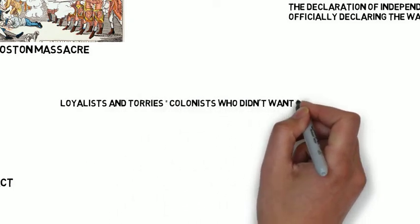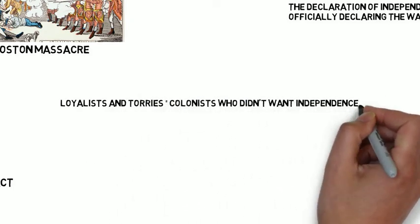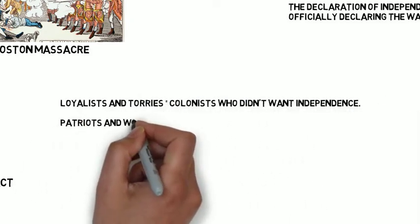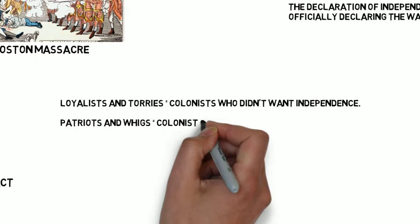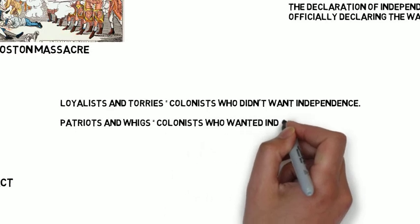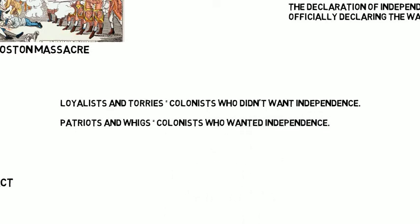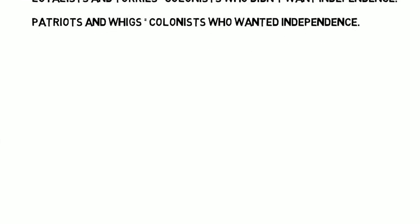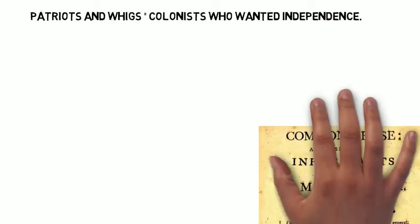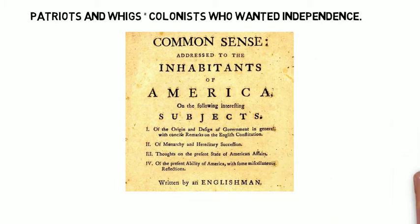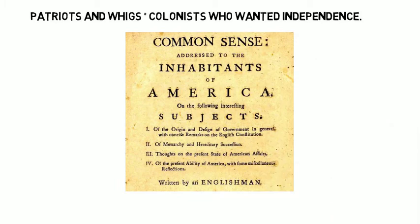Not everyone wanted to break from the British crown — some felt loyalty to the crown and were scared of Britain's superior military. Loyalists and Tories were colonists who didn't want independence, while Patriots and Whigs were colonists who wanted independence. Thomas Paine's "Common Sense" derided the monarchy and persuaded many colonists to fight the war of independence, converting many people to become Patriots or Whigs.